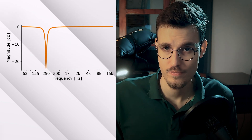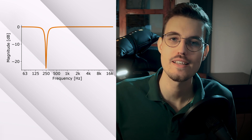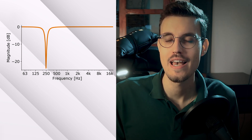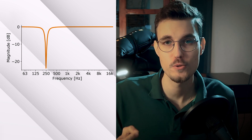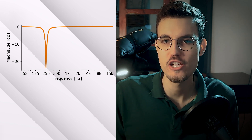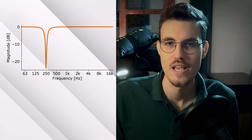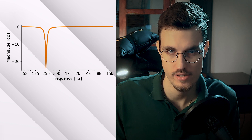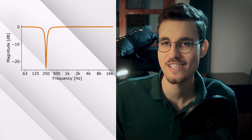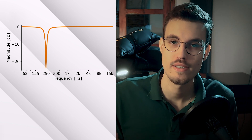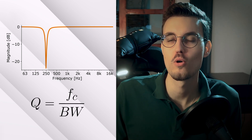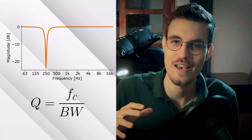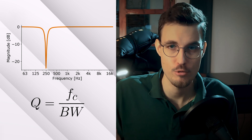A band stop filter, or notch filter, is a filter that attenuates frequencies in a certain frequency range. This frequency range is determined by a center frequency and a bandwidth. The center frequency points to the frequency with the largest attenuation — the dip in the magnitude response of the filter. The bandwidth determines how wide the dip or valley will be around this center frequency. In order for the band stop filter to sound equally wide in bandwidth at all center frequencies, we often use the Q, or quality factor, or Q factor parameter. It is defined as the center frequency fc divided by the bandwidth BW, both expressed in Hertz.